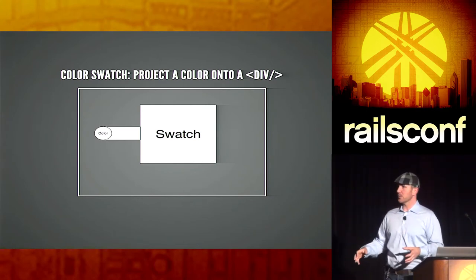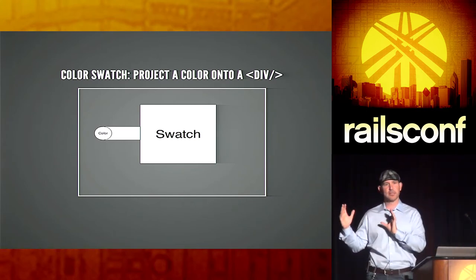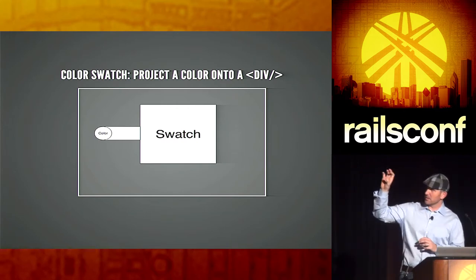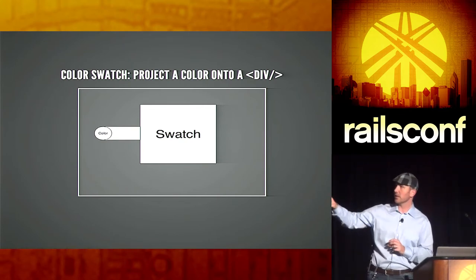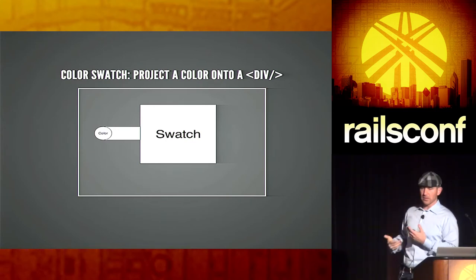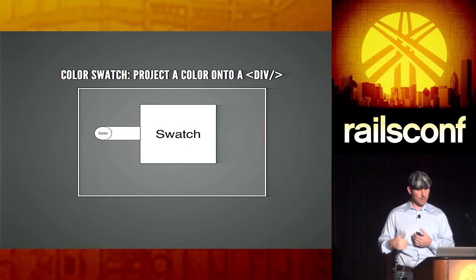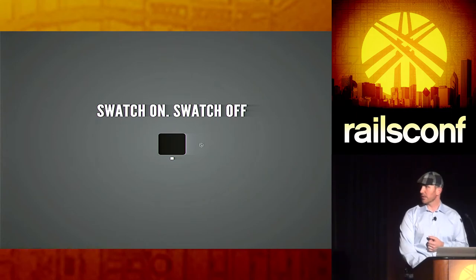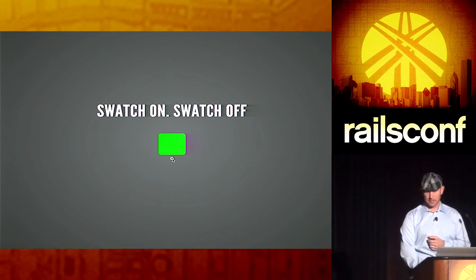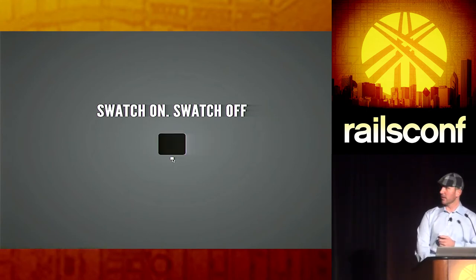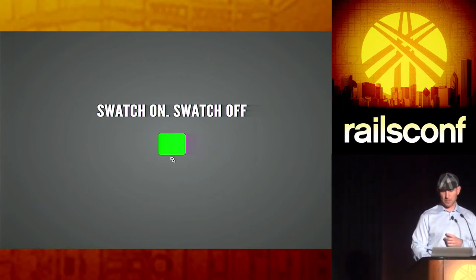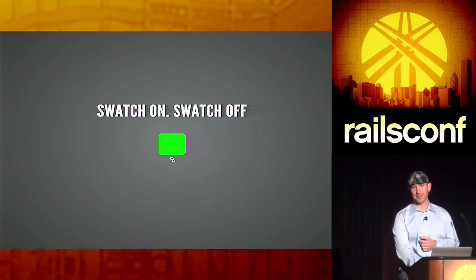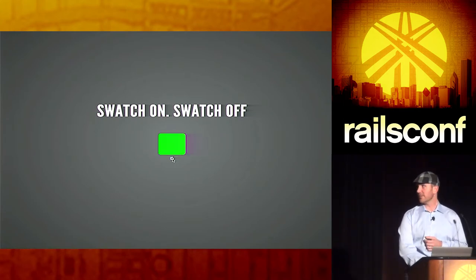The first example: we're just going to project this color onto a single div. This color value on the right — we're going to be able to set a color, remove a color, set a color. As we do that, the color swatch will update itself. I actually have a little demo here. I've got it hard-coded so that when I check this checkbox, the swatch will turn green. I can uncheck it and check it. It's simple, but it's surprisingly satisfying. When I was putting this talk together, I just sat there clicking on and off. It's great.